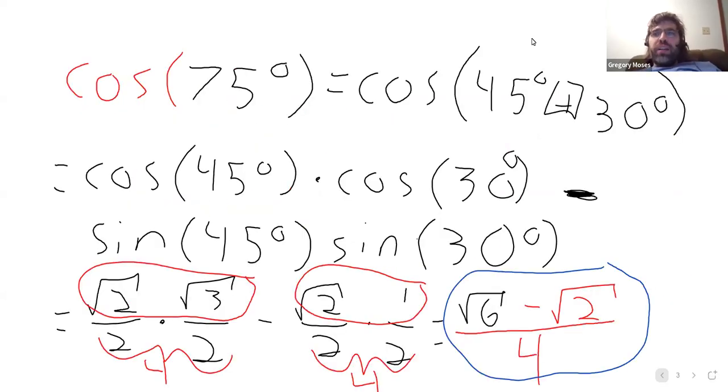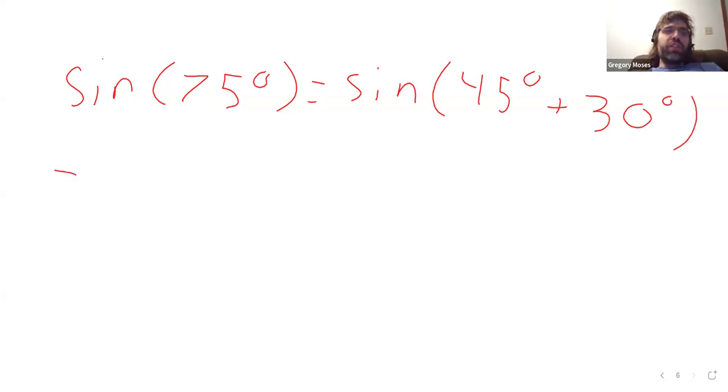In the last video, we looked at the cosine of 75 degrees and we rewrote that as 45 plus 30. Let's look at the sine of 75 degrees. And again, the way we're going to do this is that we know the sines and the cosines of 45 degrees and we know the sines and the cosines of 30 degrees. So we can write 75 as a sum and then use the sum formula.